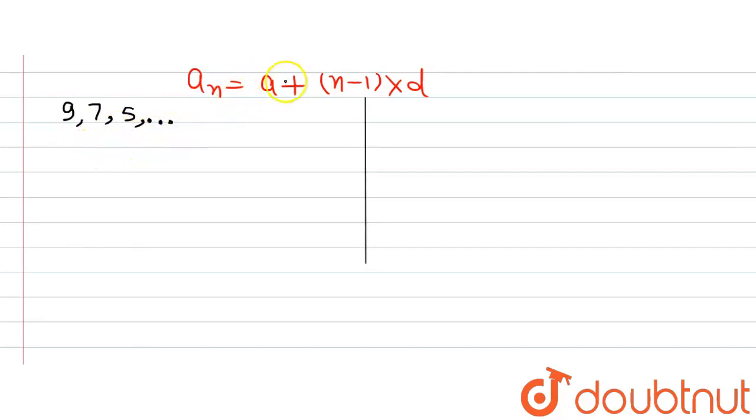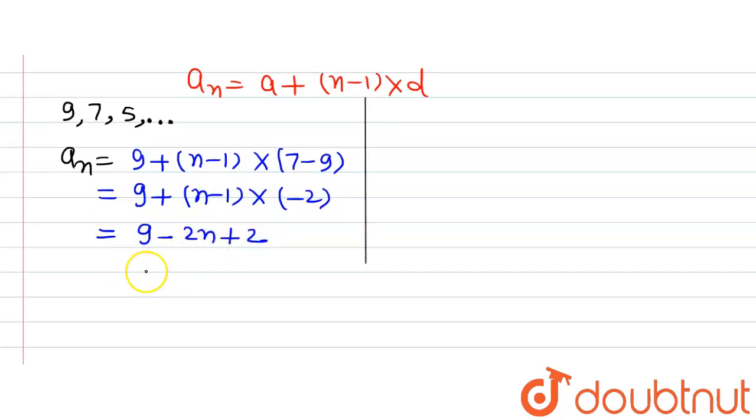Applying this formula, the nth term equals a, the first term which is 9, plus (n-1) multiplied by d. The common difference d is second term minus first term, so 7 - 9. On solving, we get 9 + (n-1) × (-2). Simplifying further, we get 9 - 2n + 2, which gives us 11 - 2n. So this is the nth term of this AP.